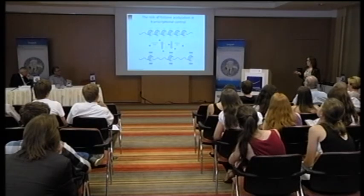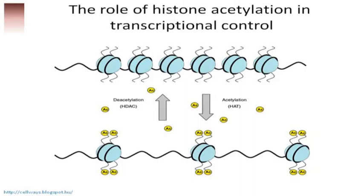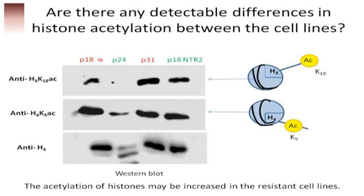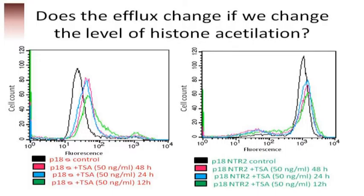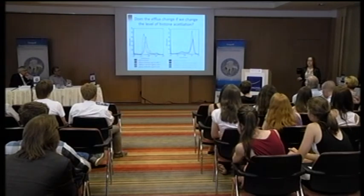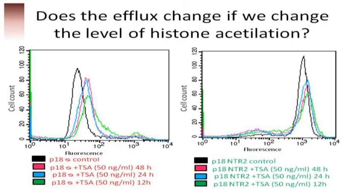One possible explanation is the role of histone acetylation, which can cause the DNA structure to loosen up and make cells more transcriptionally active. We checked if there is a difference in the level of histone acetylation between cell lines, and found that histone acetylation may be elevated in resistant cell lines in the sense of a general effect. Finally, we used a couple of histone-acetylation-changing drugs to see if administering them causes a change in cell function. We used TSA (Trichostatin A), which elevates histone acetylation, and found that resistant cell lines start to lose their resistance, which is a very curious finding that proves acetylation has a clear role in the process.